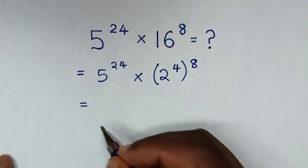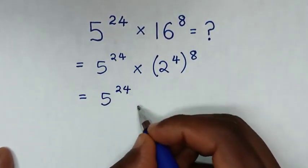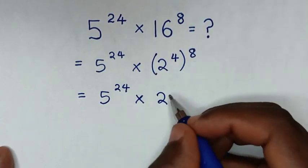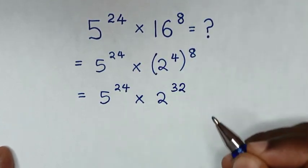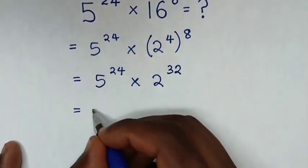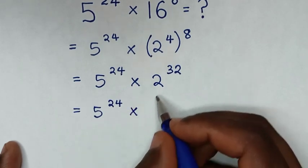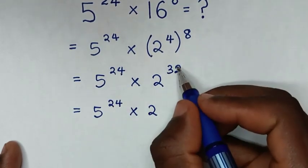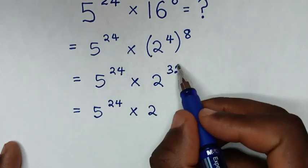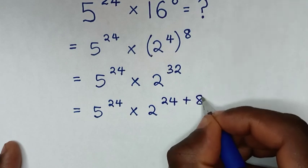In the next step, it will be equal to 5 power of 24, then times 2 power of 4 times 8, which gives power of 32. Then it will be equal to 5 power of 24, then times 2 power of 32. To get a common power of 24, we note that 32 is the same as 24 plus 8.